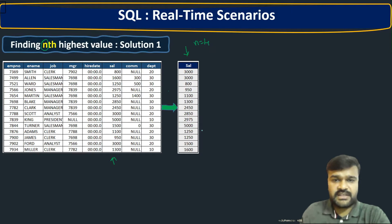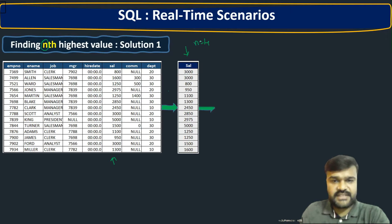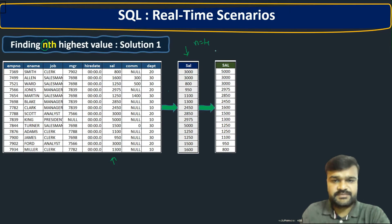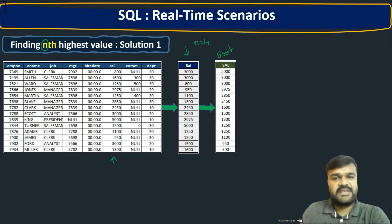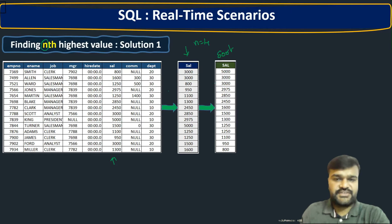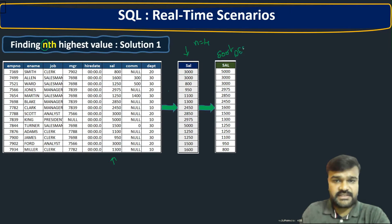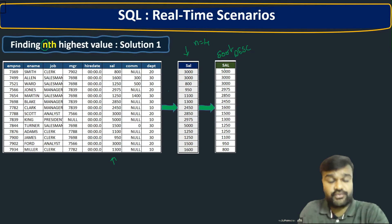The first thing we need to do is sort the salary column in descending order. After sorting, you can observe the values go from 5000 down to 800, with the least being 800. Descending order is important because we need the nth highest — in our case, the fourth highest salary.